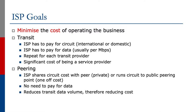Transit means that the network operator has to pay for the circuit, whether it's international or domestic. They usually have to pay for the data, and that is usually a cost per megabit per second. This has to be repeated for every transit provider the operator subscribes to, and it is a significant cost of being a service provider.